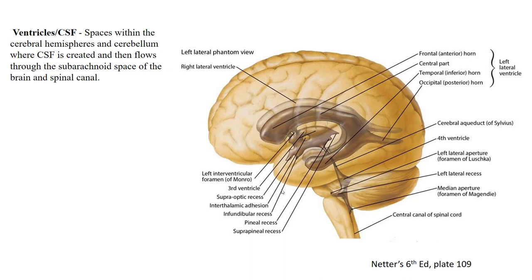The ventricles contain the CSF space, and the CSF is made by the choroid plexus. The choroid plexus sits in three places: in the floor of the lateral ventricles, in the roof of the third ventricle, and in the floor of the fourth ventricle. But let's get more familiar with the ventricles first.